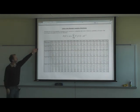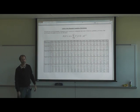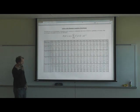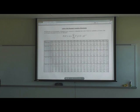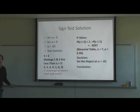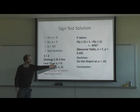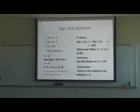As you can see in the binomial table, you have your p-values, your n's, and then the different levels. You just look that up on the table. For this, we're going to not reject at the 0.05 level, and the conclusion is there is no evidence for a median being less than three with that data set.